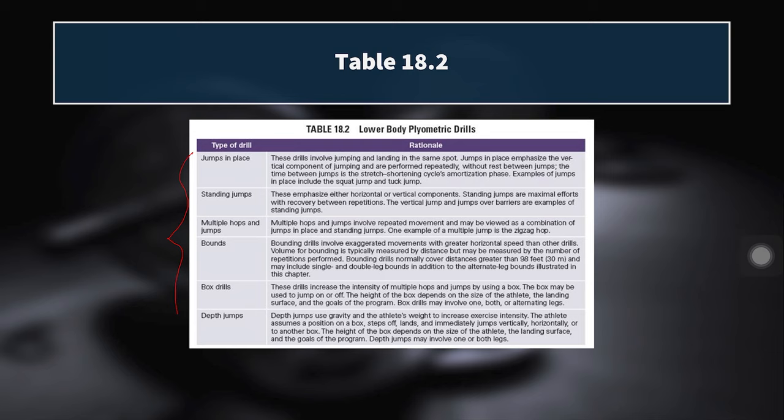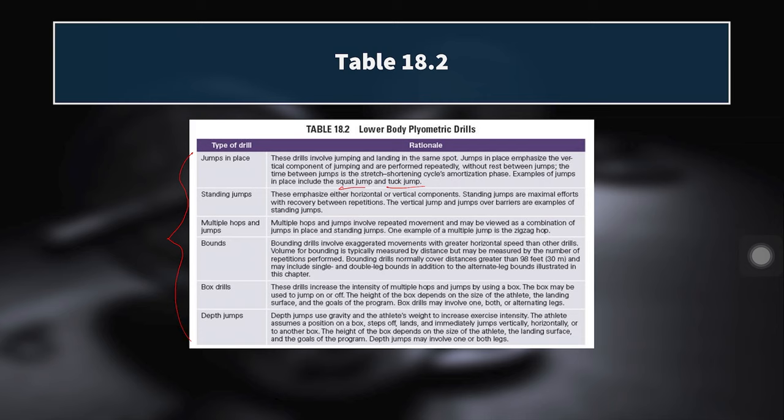Looking at this table from the text, we have six different types of lower body drills. The first is jumps in place — you jump straight up and land back down where you took off, with no box or object involved. Examples include a squat jump or a tuck jump. These can be done reactively in repetitive motion, or in singles with three to five seconds of rest between them. Single jumps allow higher intensity per jump, while repeat jumps stress the stretch shortening cycle more and develop lower body power endurance.